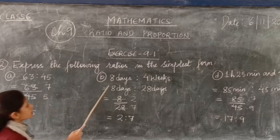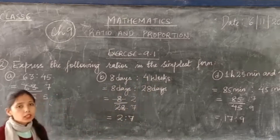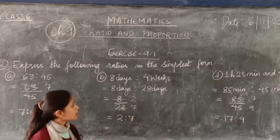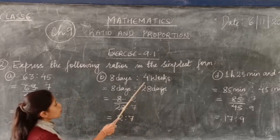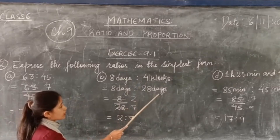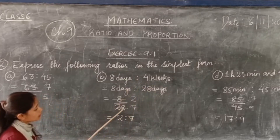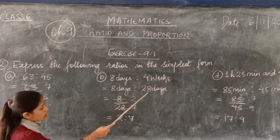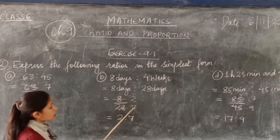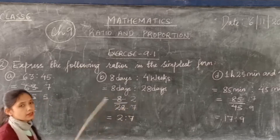Next is 8 days is to 4 weeks. Since one unit is in weeks, convert weeks into days. We know 1 week is 7 days, so 4 weeks is 28 days. Now write 8 divided by 28. Cancel — 4 twos are 8, 4 sevens are 28 — so the answer is 2 is to 7.